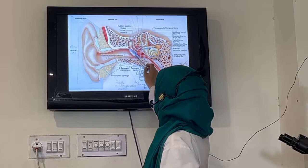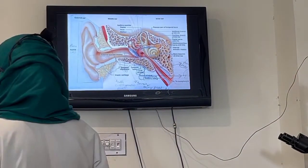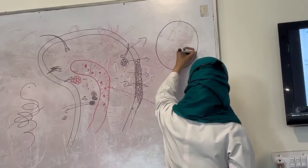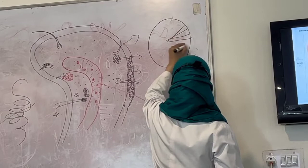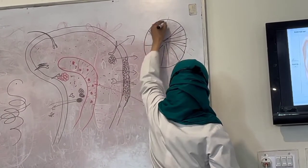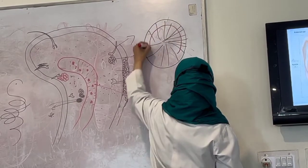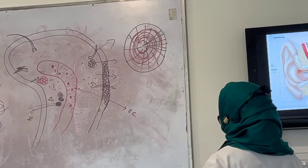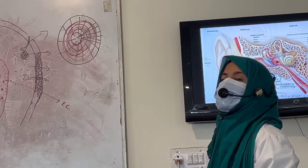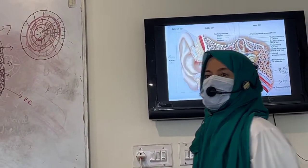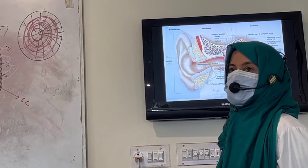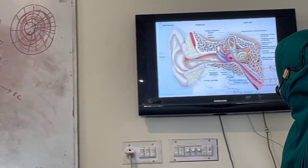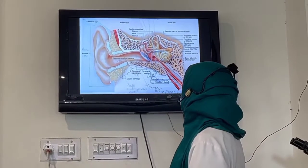Now let's take the middle fibrous layer. It has two laminae in it: the superficial one has radial fibers arranged all around, and the deep lamina has circular fibers. The collagen fibers are arranged in this way — radial in the superficial and circular in the deep layer — giving the tympanic membrane its glistening, shining, transparent appearance. So it's now clear that it has three layers: outer cutaneous, middle fibrous, and inner mucous.